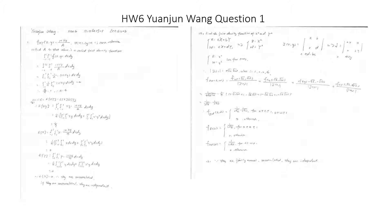The marginal density f_Z(z) equals 1/(2√z), and the marginal density f_W(w) equals 1/(2√w).